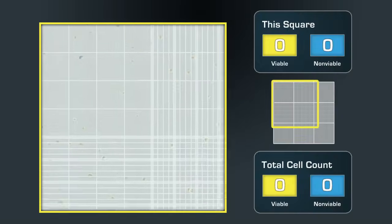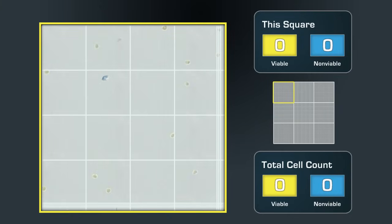Let's count the cells in the first square. One, two, three, four, five, six, seven, eight.